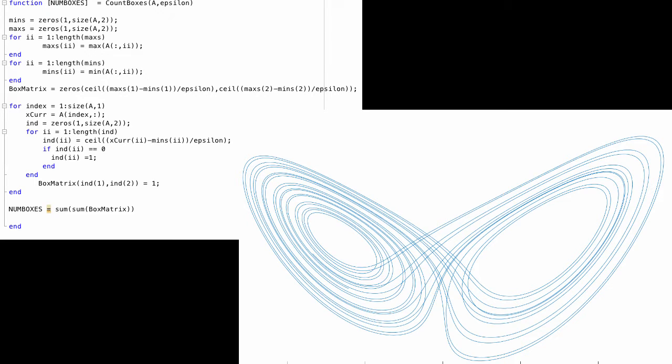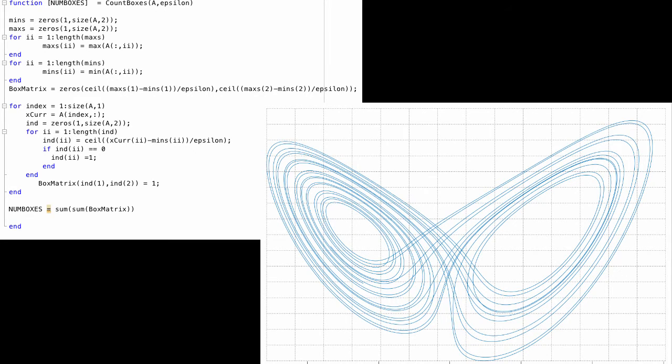The first step in this process is to write a program to calculate the number of boxes of side length epsilon needed to cover an object. To do this, we'll cover the object with a grid. These are the gray dots you see in the right picture. Each one of these squares is epsilon by epsilon wide.